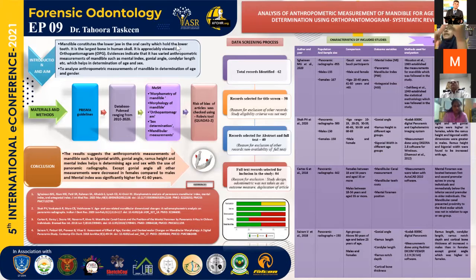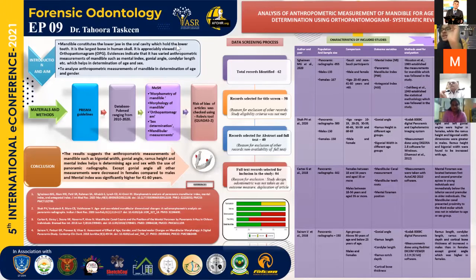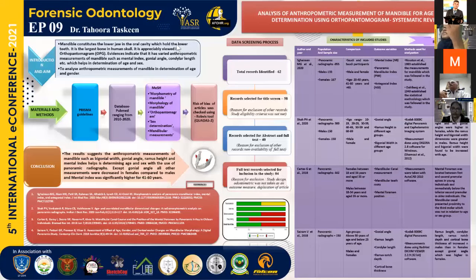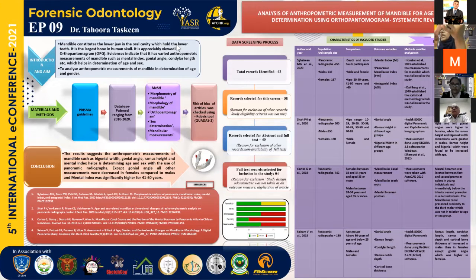The first article chosen was the study by Sygram M.G. et al. (2020), which considered 955 radiographs. Comparison was done between Saudi and non-Saudi participants, male and female, across age groups 20–40, 41–60, and above 60 years. Outcome variables were the mental index, panoramic mandibular index, and antegonial index, measured using the methodology of Houston et al. and Dahlberg et al. Results concluded that mental index and antegonial index were higher in males compared to females.